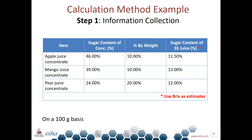Let's dive into another example from the FDA draft guidance: a juice blend consisting of apple juice concentrate, mango juice concentrate, and pear juice concentrate, based on a 100-gram serving. We collect: sugar content of each concentrate — 46% apple, 39% mango, 24% pear; percent by weight in the formula — 10% apple, 10% mango, 20% pear; and the sugar content of each corresponding single-strength juice using the minimum BRIX table — apple is 11.5%.